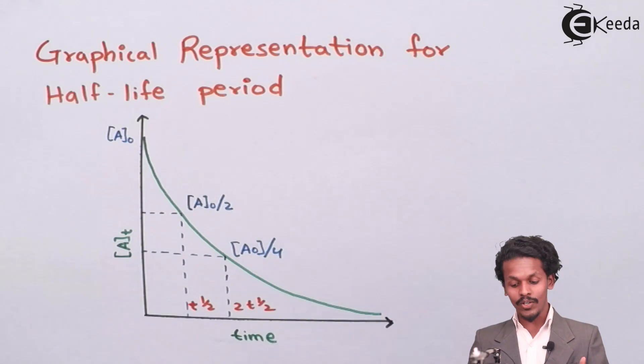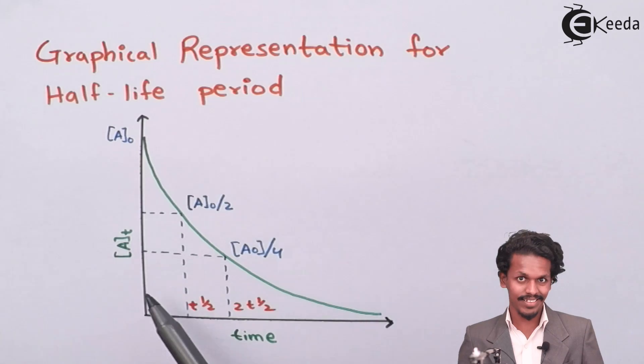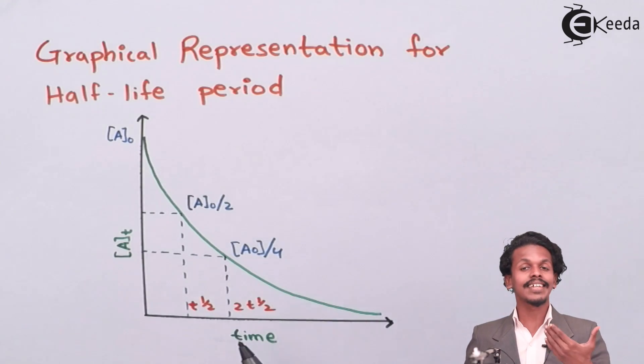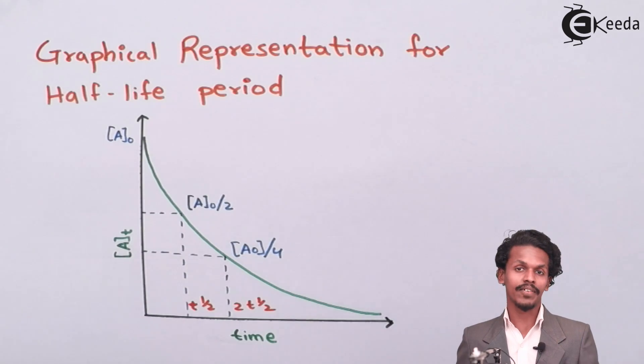So the time corresponding to the concentration A0 by 4 will now be at and the time will be 2 times that of the half-life. Similarly, we can do further and further.